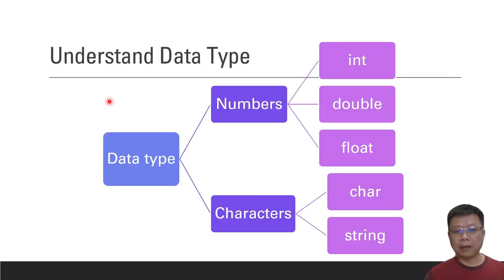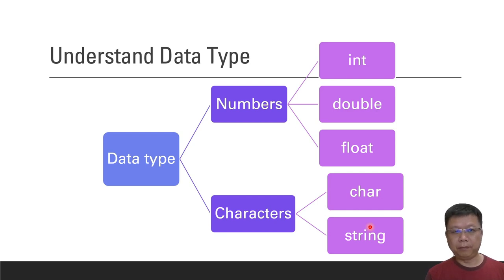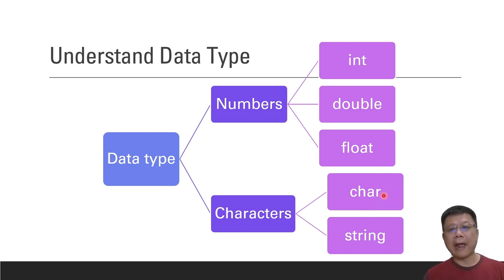For character-based types, we have char and string. String requires an additional library and is composed of more than one character — for example, a word or your name. If you want to store a single alphabet character, like 'y' for yes or 'n' for no, you use char to represent that single alphabet.